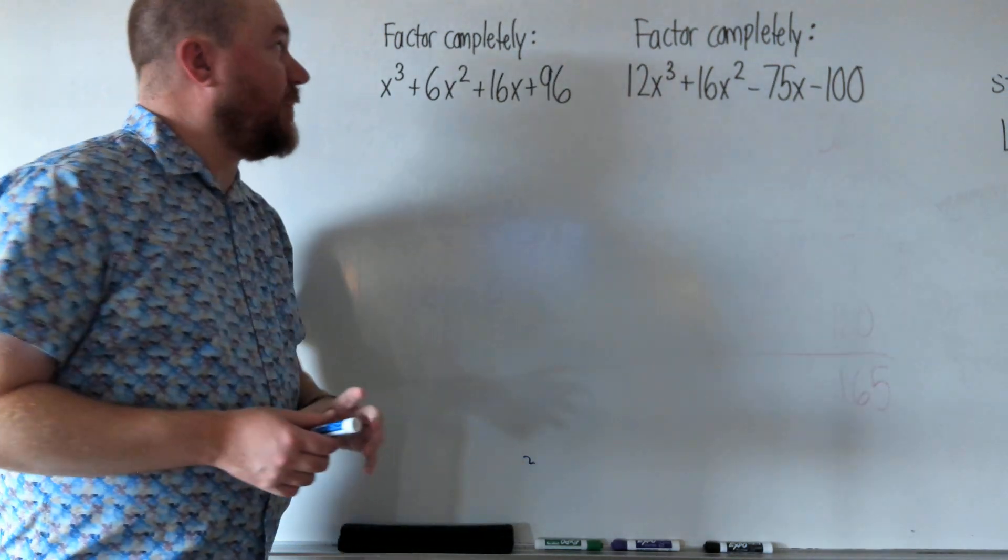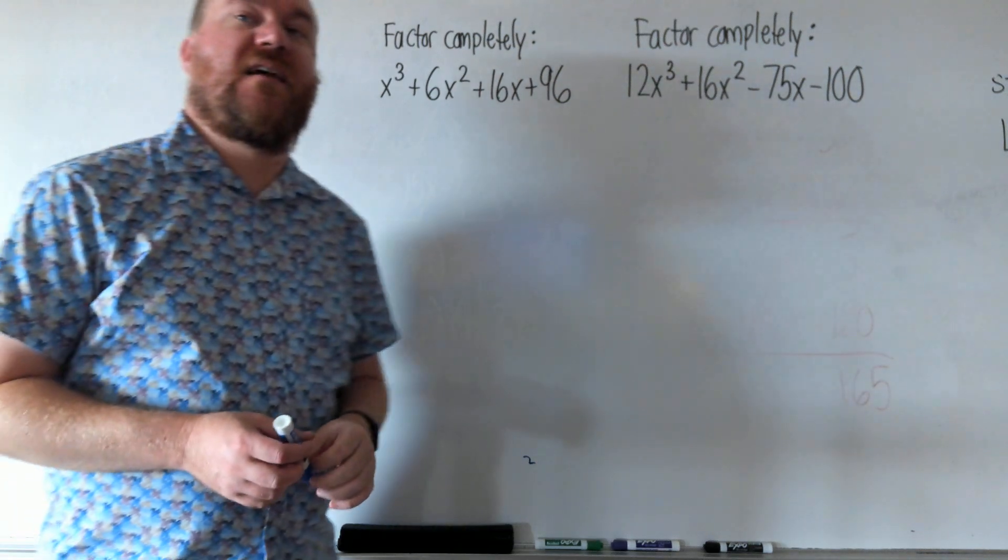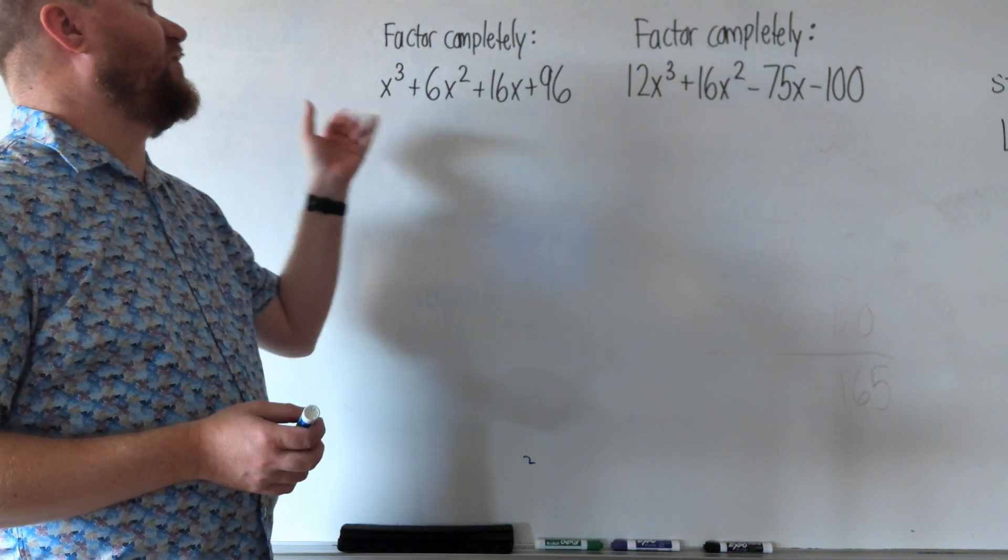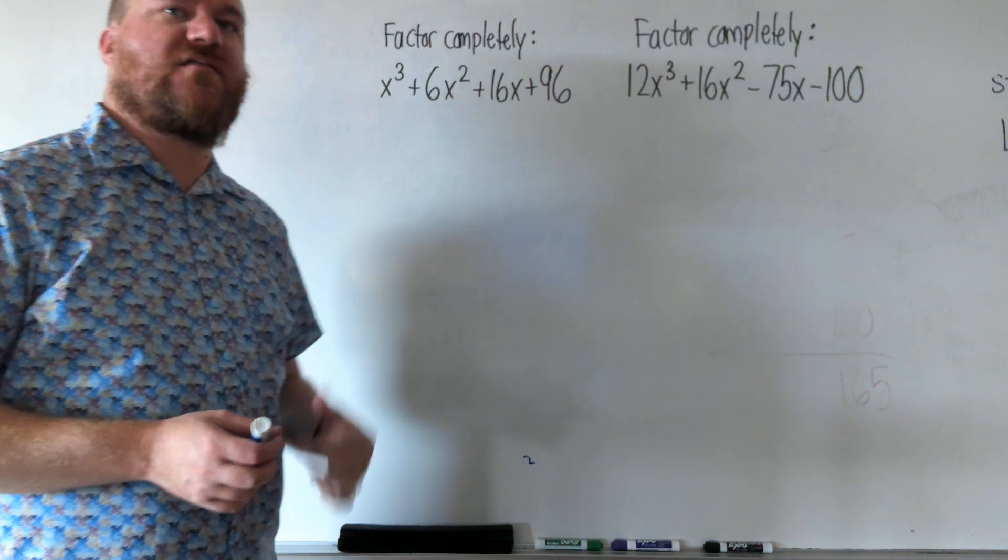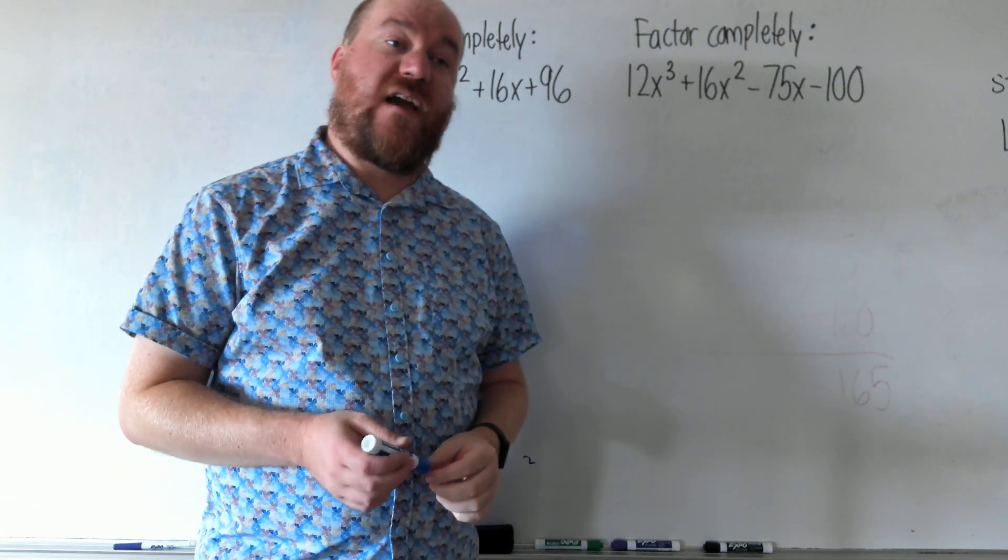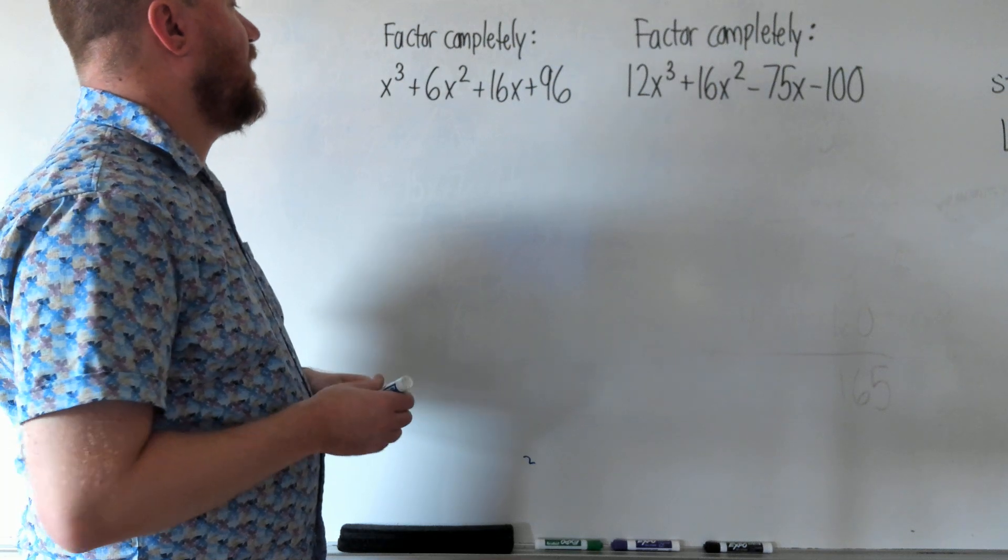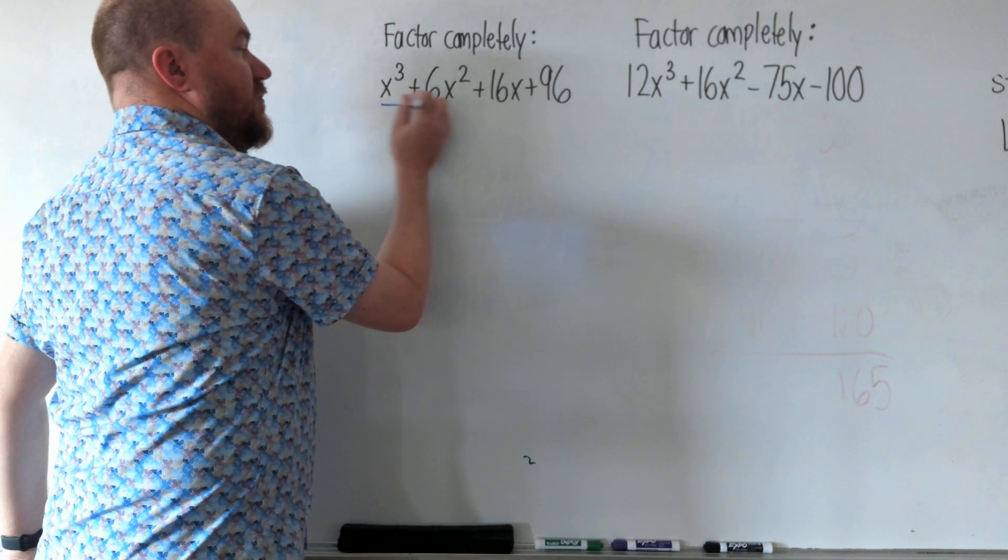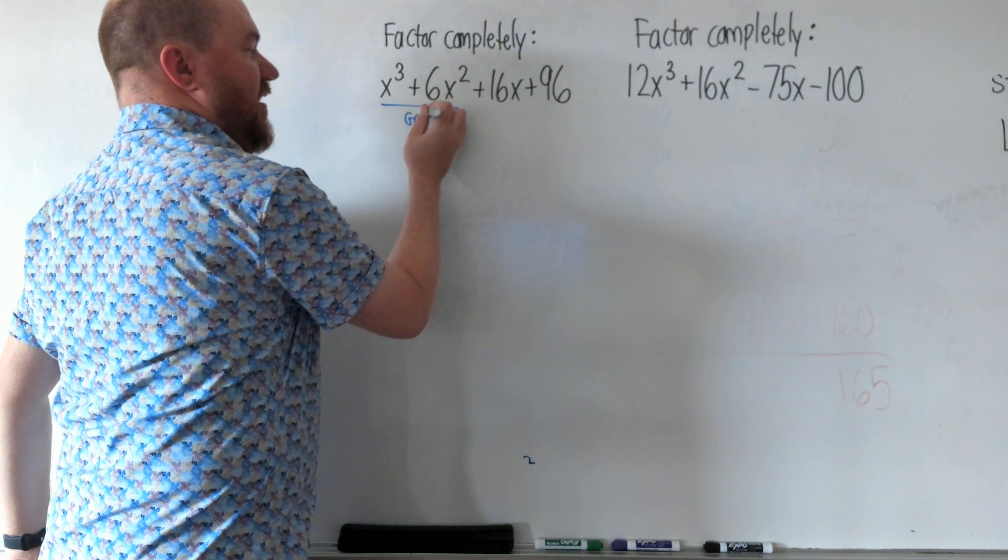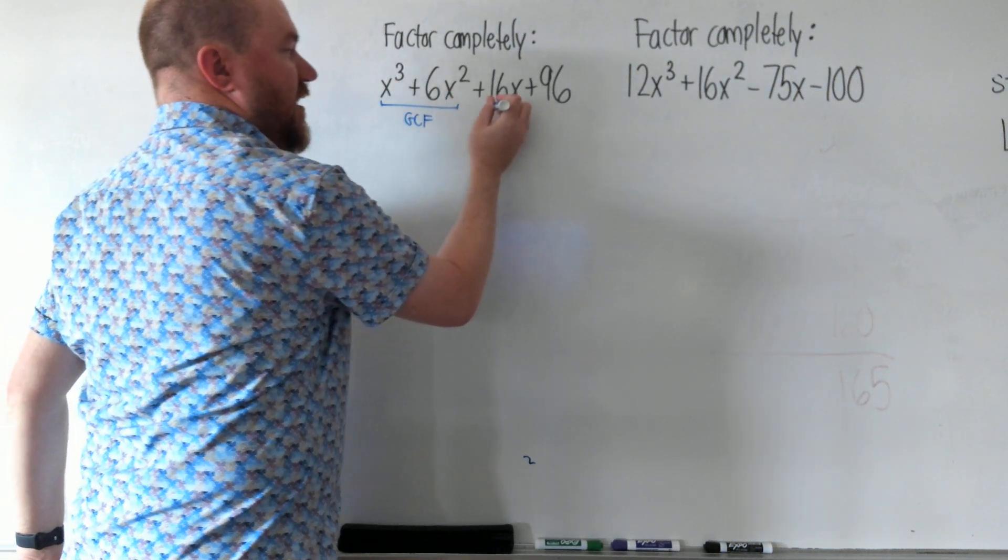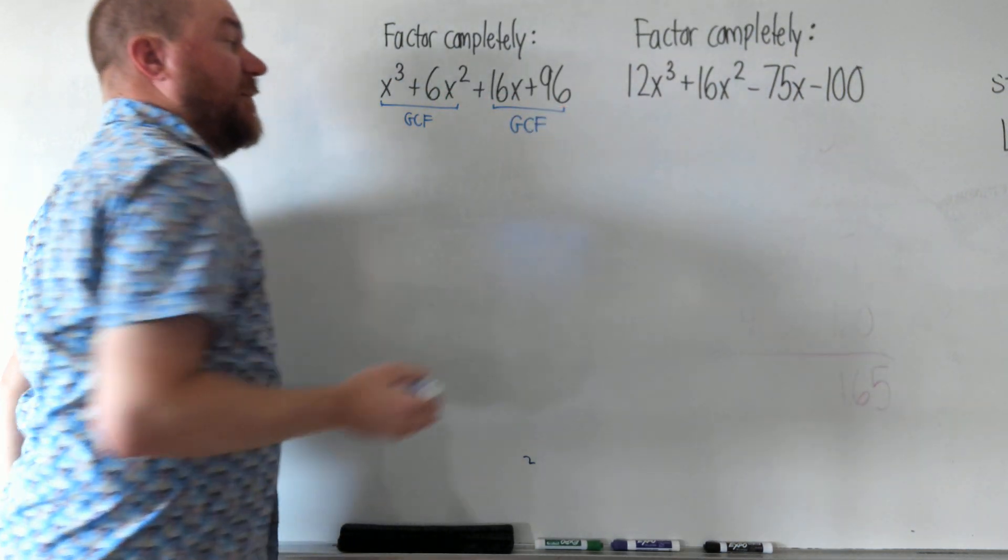This first example says factor completely. When you're given a question that has four terms in it, that's usually a good sign that we're going to use factoring by grouping. Factoring by grouping is when you take the first two terms and GCF them, and then you take the second two terms and GCF them.